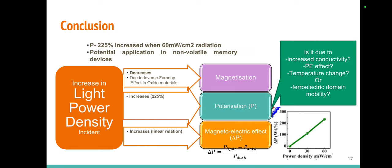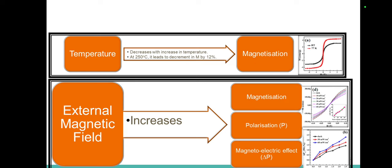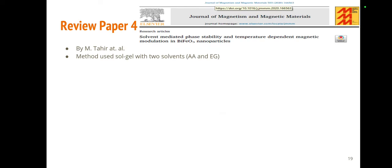Having seen the effect of light on these phenomena, we now look at the effect of temperature on magnetization. There is a decrease in magnetization with temperature, as we know that thermal energy causes randomization of magnetic domains. This has been confirmed in the data as well, and with increase in magnetic field all three phenomena show increasing trends.